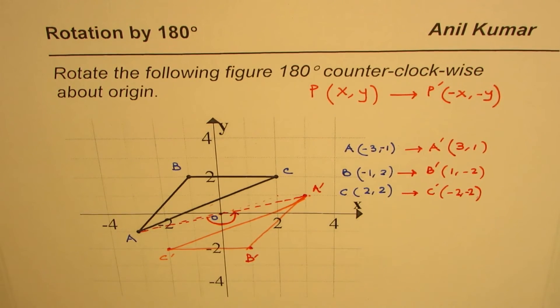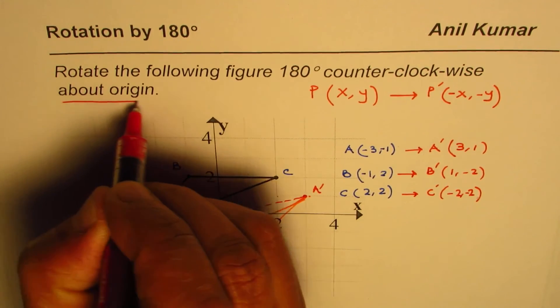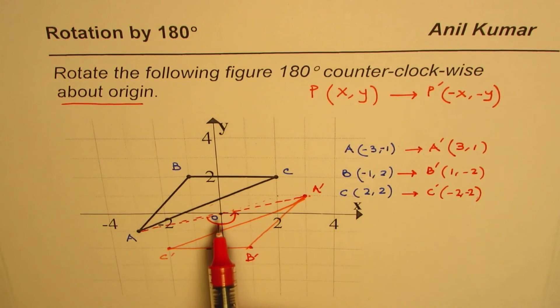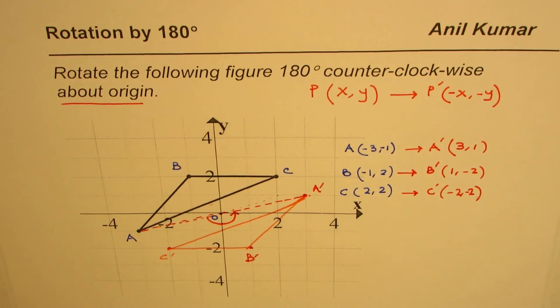We'll take up another example now. This one was about origin, and in the next example we'll have the same figure but we'll take a point rotation about a point which is not the origin but some other point. I'm Anil Kumar and I hope that helps many of the subscribers. Thank you.